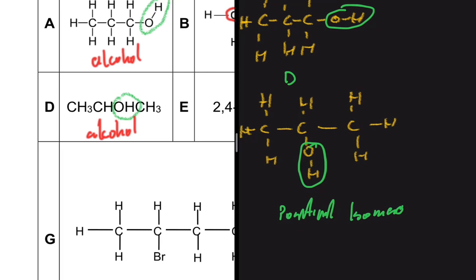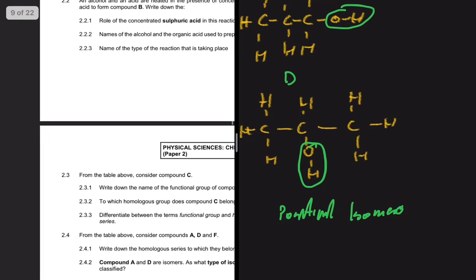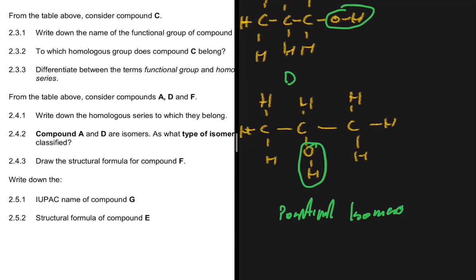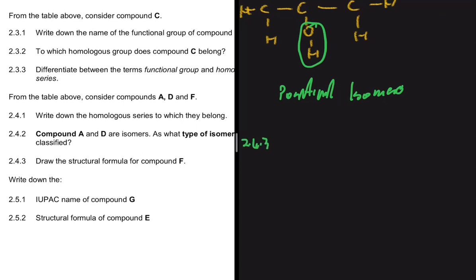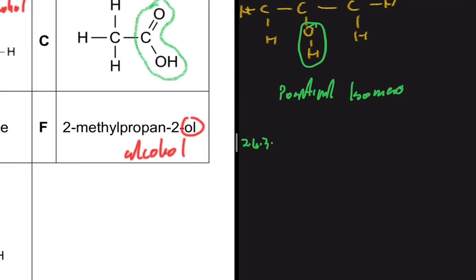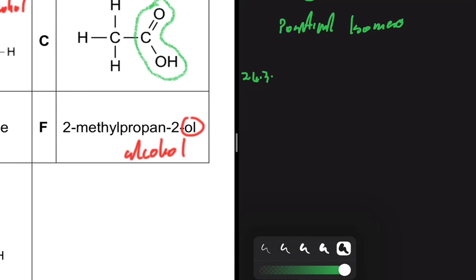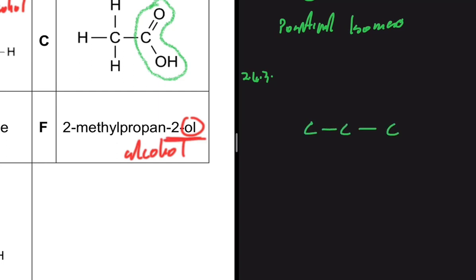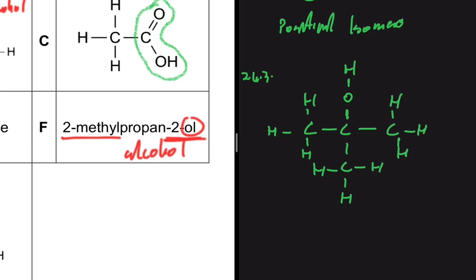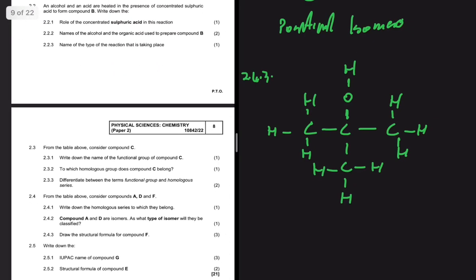For question 2.4.3, we draw the structure of compound F: 2-methylpropan-2-ol. Starting with 'prop' — three carbons: one, two, three. The '2-ol' tells us the -OH is on the second carbon, so we place the -OH there. The '2-methyl' means there is a branch of one carbon on the second carbon. Then we fill in the remaining hydrogens to complete the structural formula.